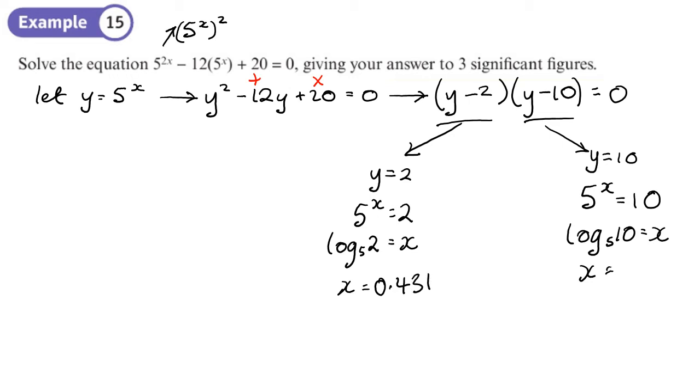3 significant figures. There we go 0.431 and then just go back and change the 2 to a 10. That's going to be 1.43.